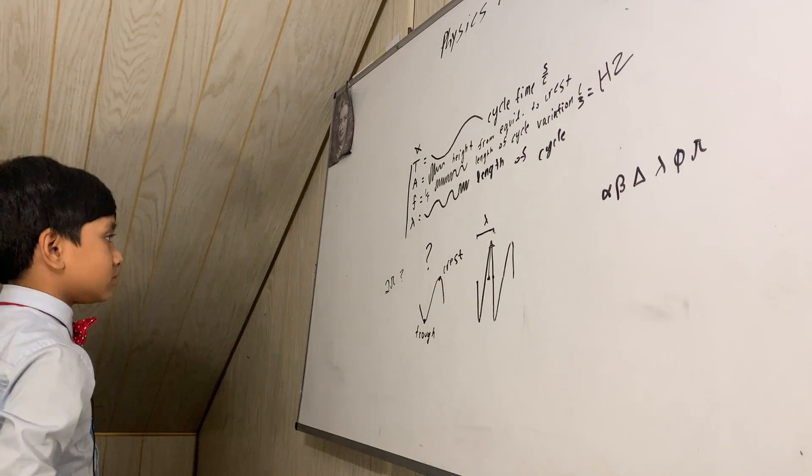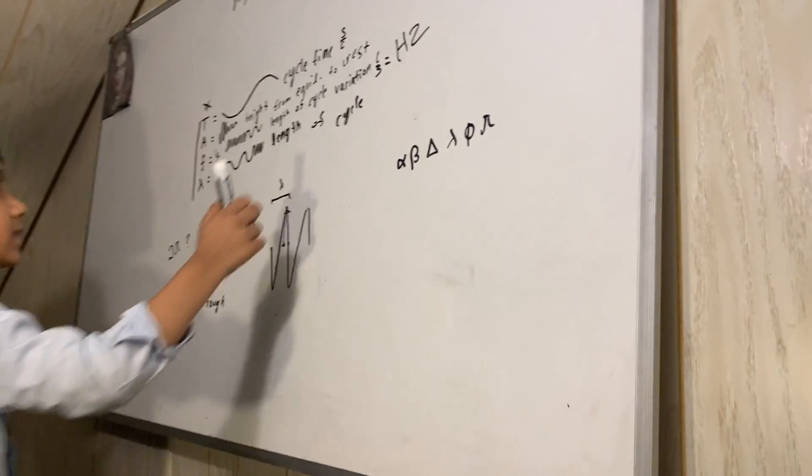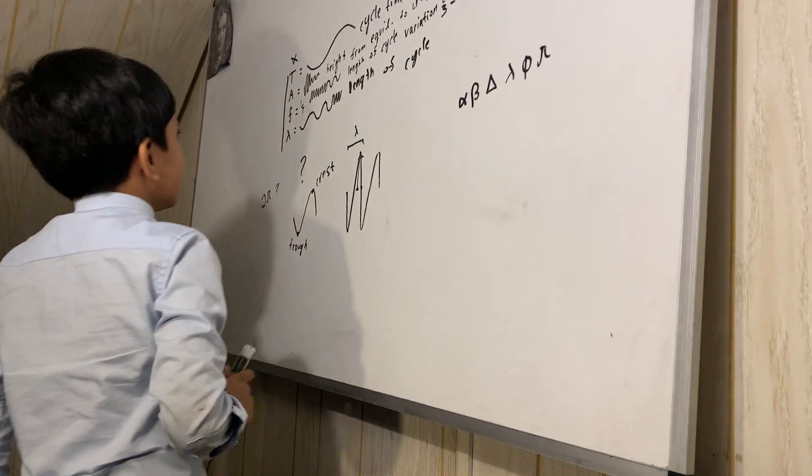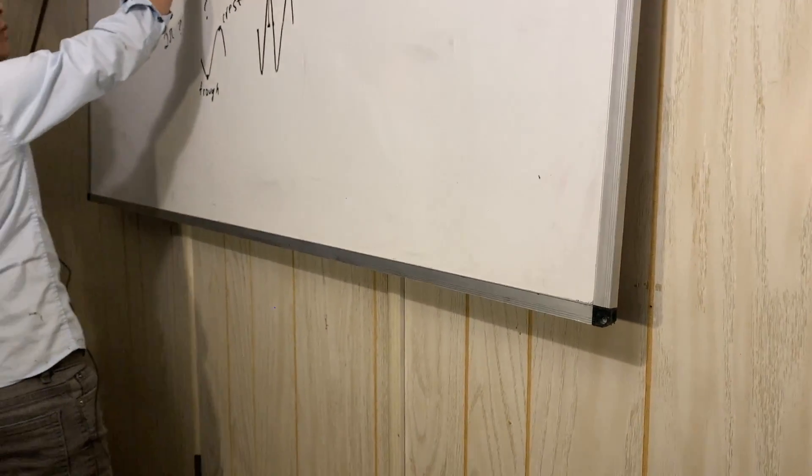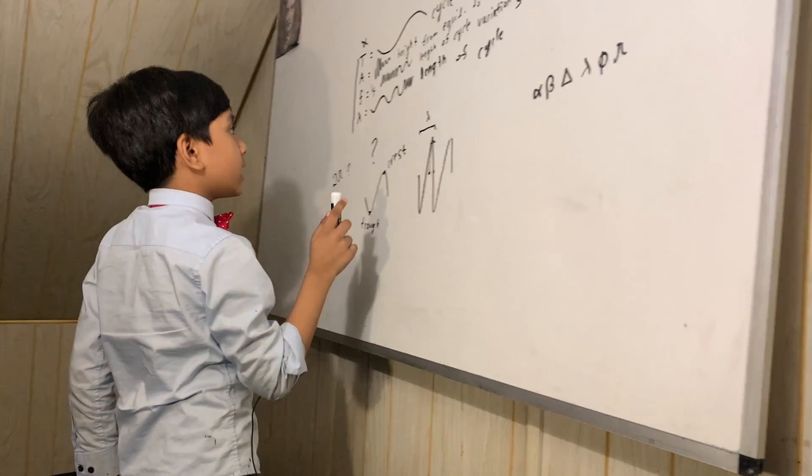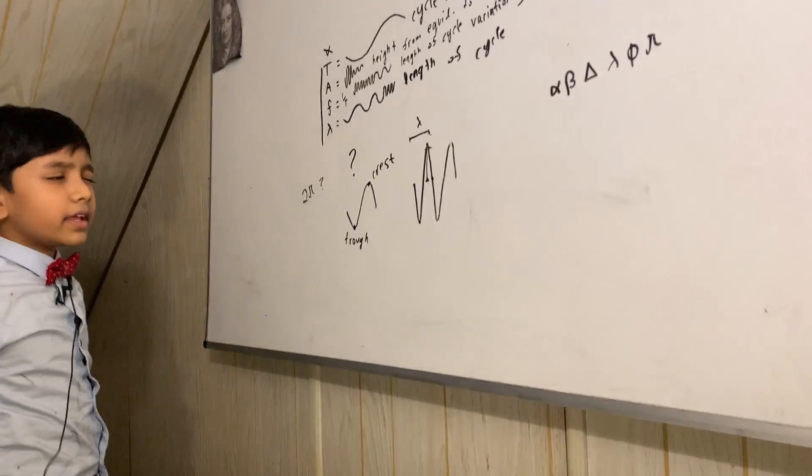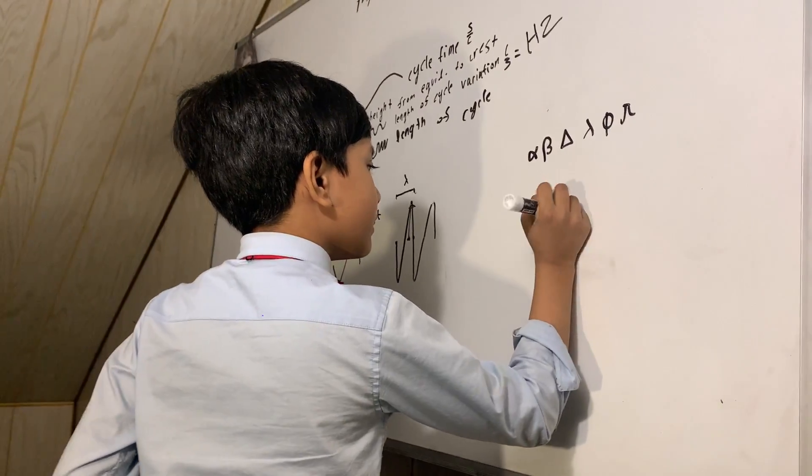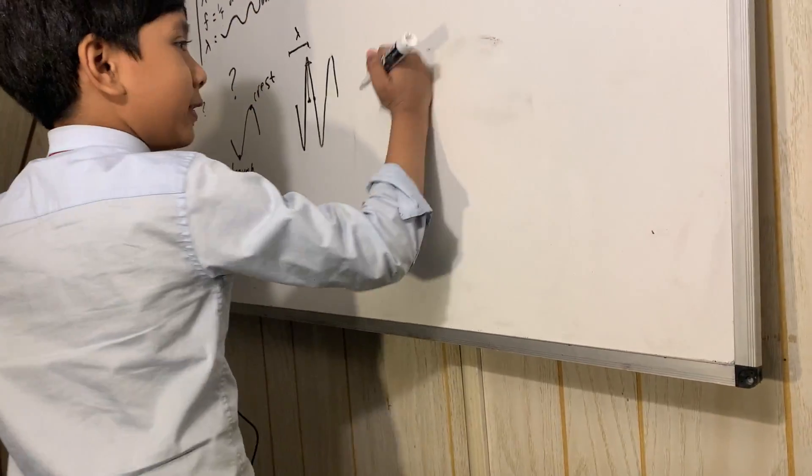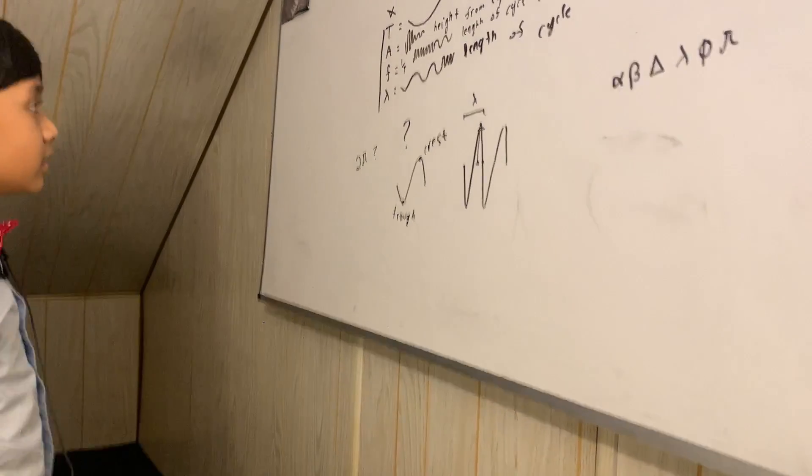Now we know what T is - it's the seconds that every cycle takes. We know what amplitude is - it's the height from equilibrium to the crest. Frequency is related to the length of the cycle variation. Lambda is just the length of a cycle.